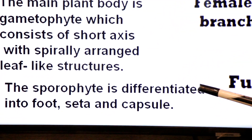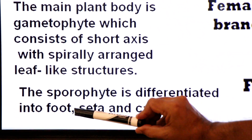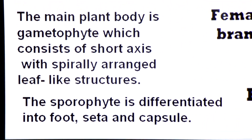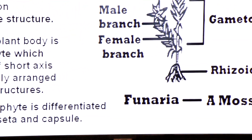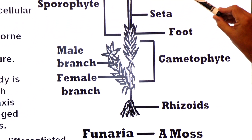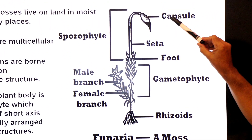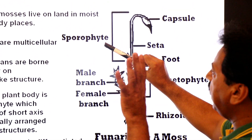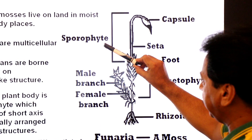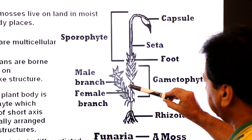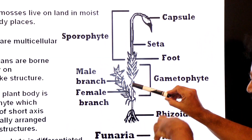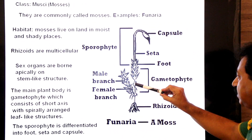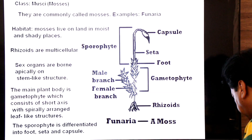The sporophyte is differentiated into foot, seta, and capsule — these are the three parts of the sporophyte. Their sporophyte is dependent on the parent female gametophyte to get nourishment.